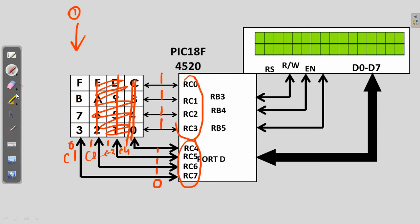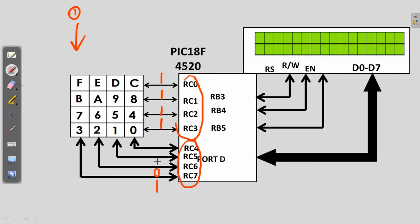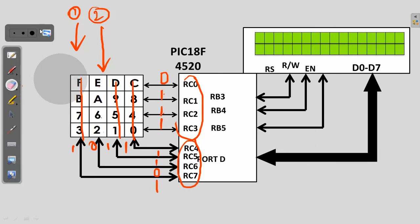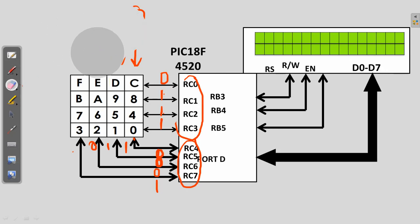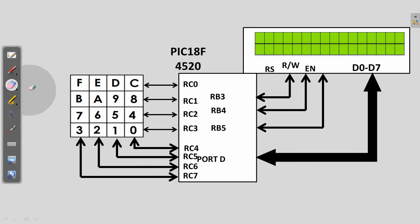This is iteration 1. For iteration 2, these values change: C1=1, C2=0, C3=1, C4=1. Now only column 2 is active, and I check all 4 rows again. If row 1 becomes 0, key E is pressed; row 2 = 0 means A; row 3 = 0 means 6; row 4 = 0 means 2. Similarly, I do this for iterations 3 and 4, shifting the 0 to C3 and C4 respectively. If you don't understand this part, you can watch it again.